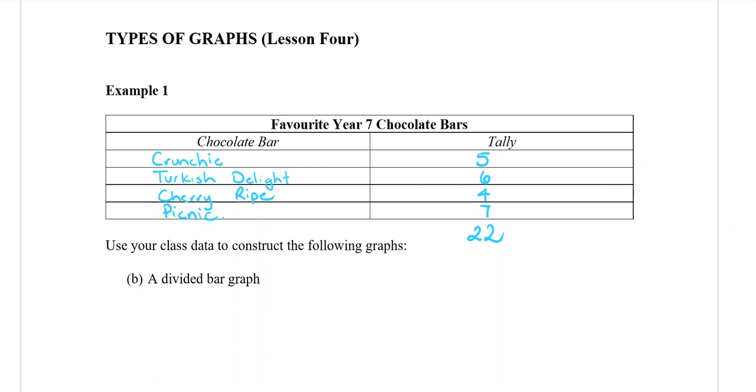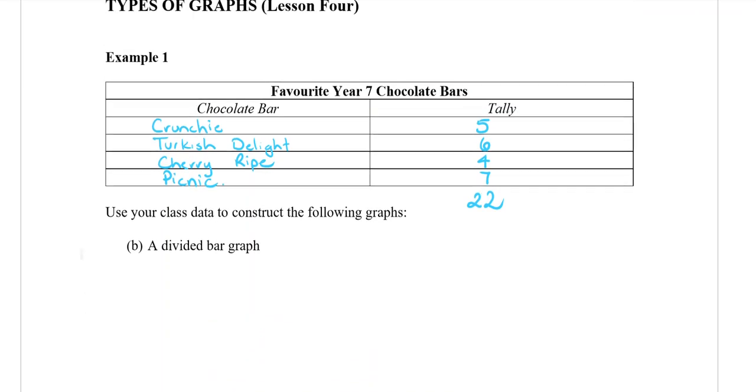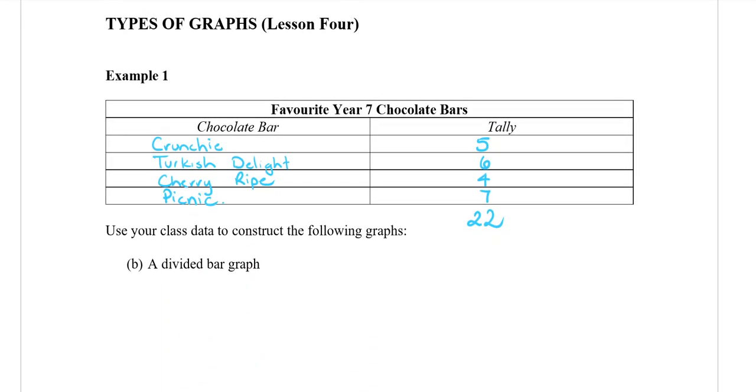Okay, the new graph that we're drawing is a divided bar graph. Just to give you a sneak peek, it's going to be one big bar like that that we're going to be dividing up. But before we draw the bar, we need to work out how big each little piece is going to be inside for each one of our chocolates.